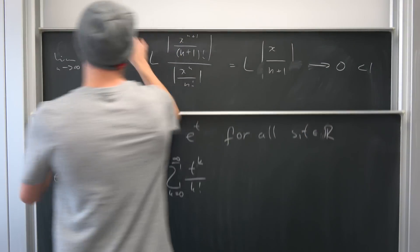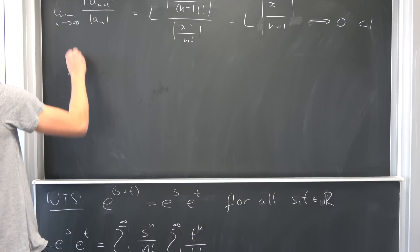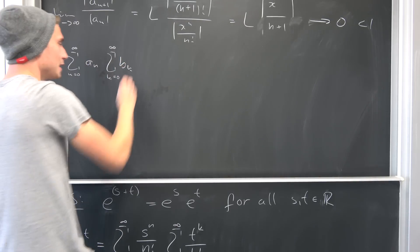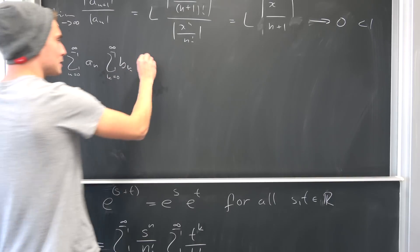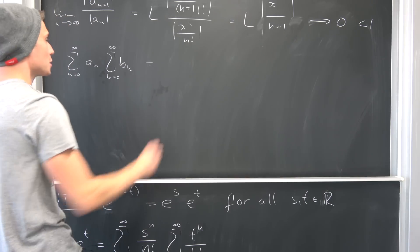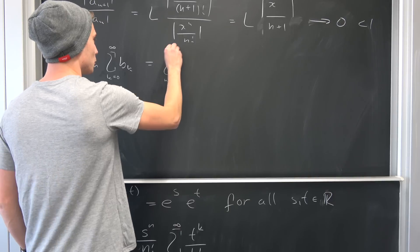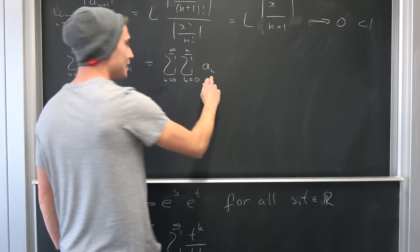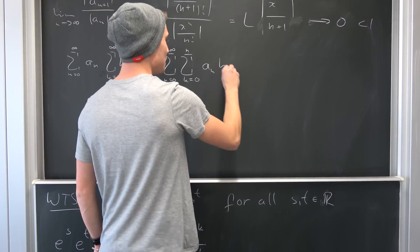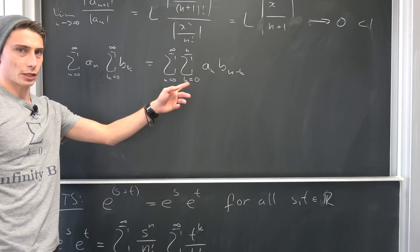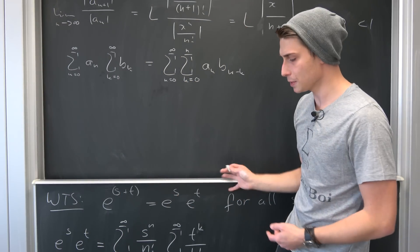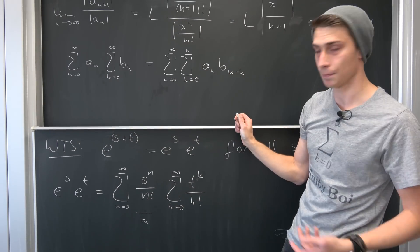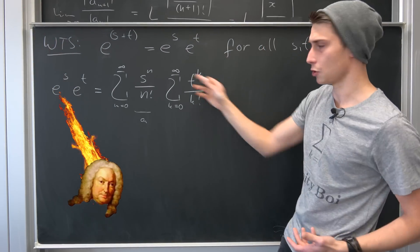Let's take a look at the Cauchy product. If we have a sum from n equals 0 to infinity of a_n, and a sum from k equals 0 to infinity of b_k, and both of those series converge absolutely, then their product equals a sum from n equals 0 to infinity of the inner sum from k equals 0 to n of a_k times b_{n minus k}. You can prove this by examining all the members of the series along the diagonal.